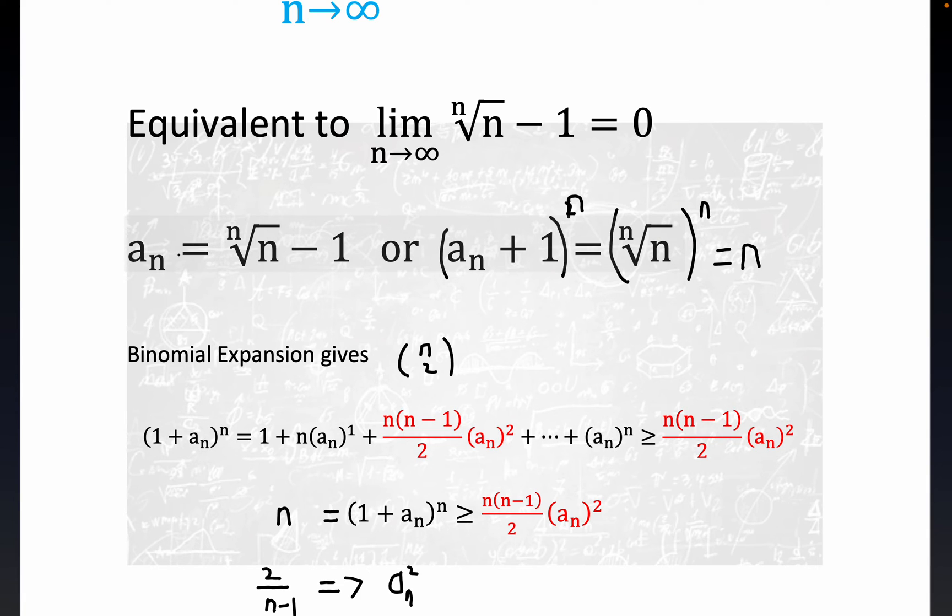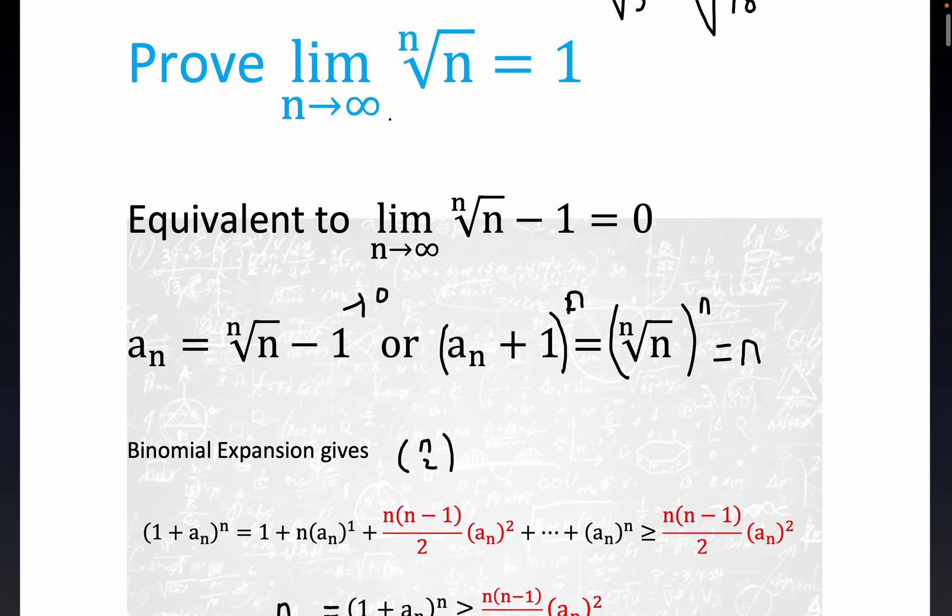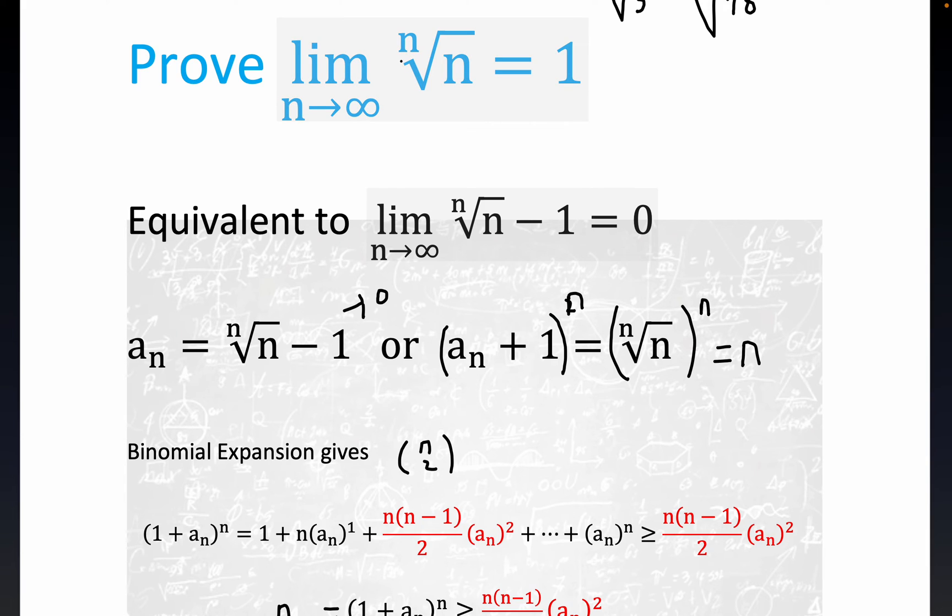Right here, this is your a sub n. We've just shown that this tends to zero. This expression tends to zero. But if this tends to zero, then the original limit, the nth root of n, has to tend to one as n gets large. I don't have it all on one screen, but hopefully that's clear enough.